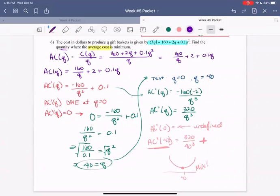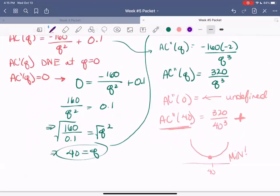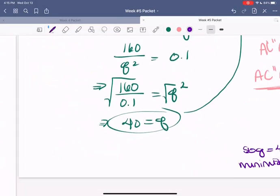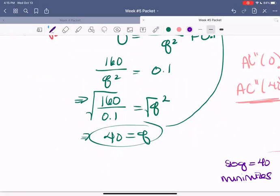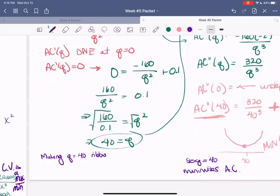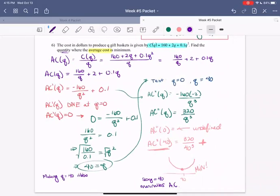So let's summarize together. So this means Q equals 40 minimizes average cost. So if we want to write our answer in a complete sentence, we can say, making Q equals 40 ribbon bobs or winders or whatever we have. Let's look at our problem here. And we're actually making gift baskets in this problem.